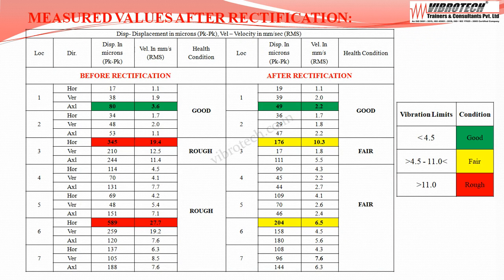After the rectification work, vibration levels decreased. The vibration values are maximum at motor non-drive end axial: velocity up to 2.2 mm/s rms with displacement of 49 microns peak to peak. At pulley free end bearing horizontal: velocity up to 10.3 mm/s rms and displacement of 176 microns peak to peak. At low pressure cylinder bearing horizontal: velocity up to 6.5 mm/s rms and displacement of 204 microns peak to peak.